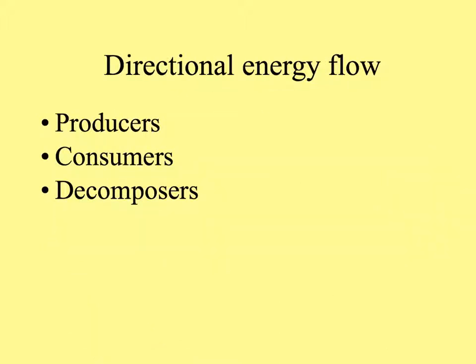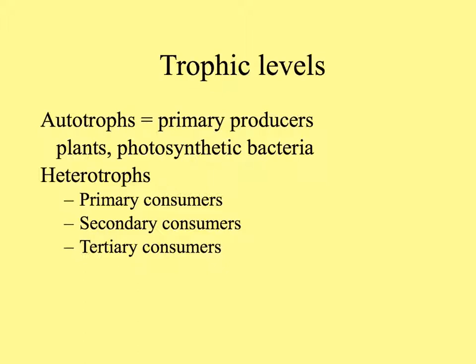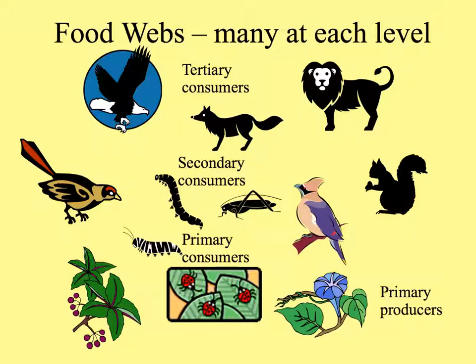Energy flows from producers to consumers, and then both of these die and the energy goes to decomposers. The primary producers are autotrophs, or self-feeders. These include plants and other photosynthetic organisms like bacteria or cyanobacteria. Heterotrophs, those that feed on others, include herbivores or primary consumers, secondary consumers or first-level carnivores, and tertiary consumers, sometimes even higher levels. In real life, it's not just food chains but food webs, with many participants at each level.